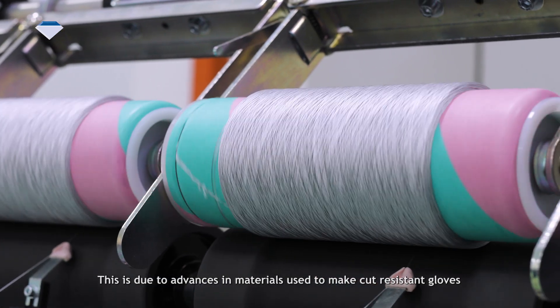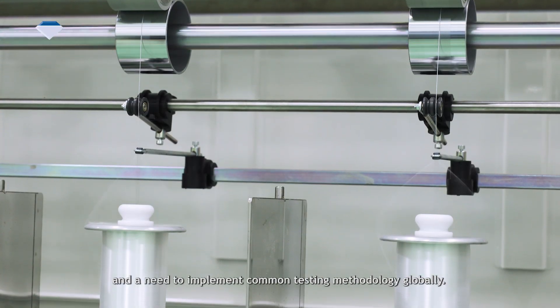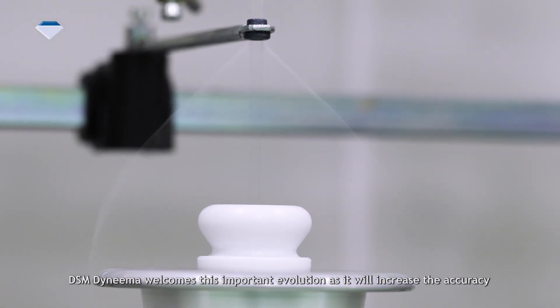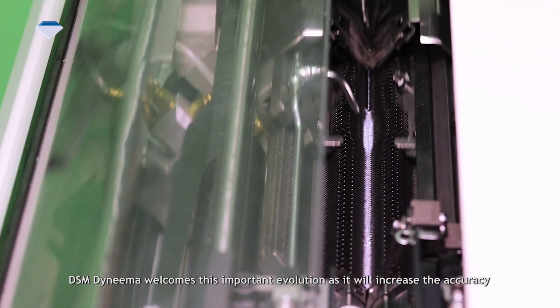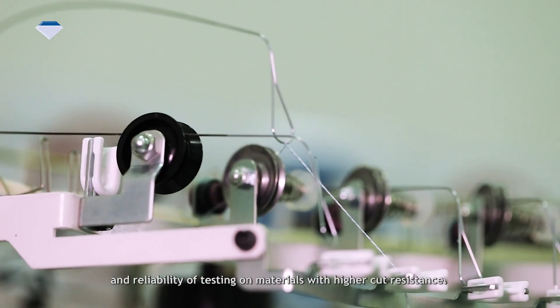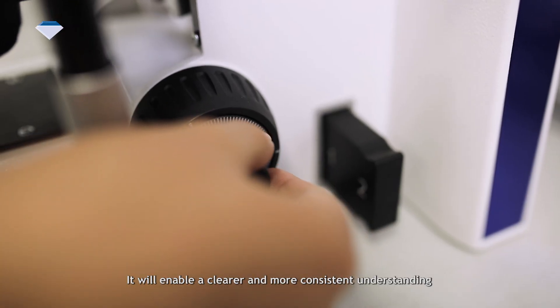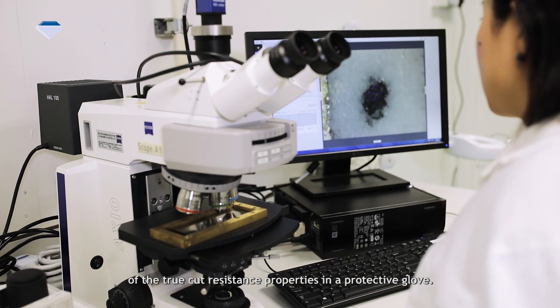This is due to advances in materials used to make cut-resistant gloves and the need to implement common testing methodologies globally. DSM Dyneema welcomes this important evolution as it will increase the accuracy and reliability of testing on materials with higher cut resistance. It will enable a clear and more consistent understanding of the true cut-resistant properties in protective gloves.